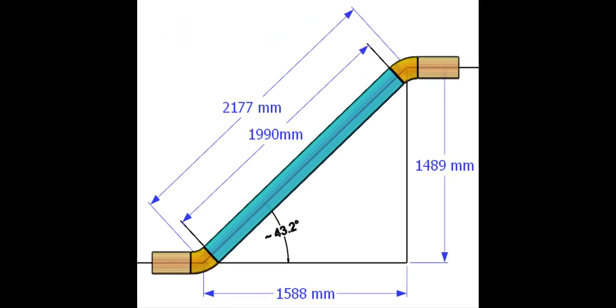The result of the calculation is 1990 millimeters, and that is the true length of the pipe.